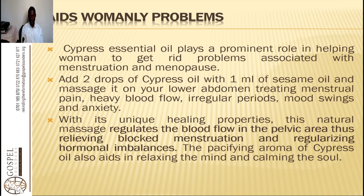Cypress oil is used for women's problems. It plays an important role in helping women get rid of problems associated with menstruation and menopause. Add two drops of cypress oil with one milliliter of sesame oil and massage it on your lower abdomen, treating menstrual pain, heavy blood flow, irregular periods, mood swings, and anxiety. With its unique healing properties, this natural massage regulates the blood flow in the pelvic area, relieving blocked menstruation and regularizing hormonal imbalances.